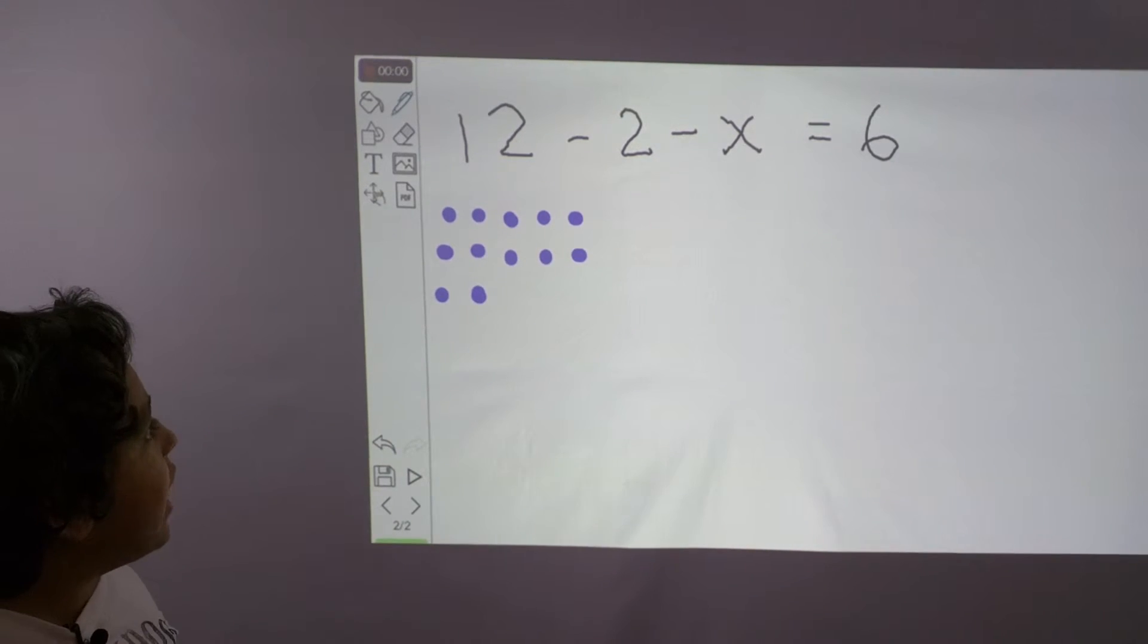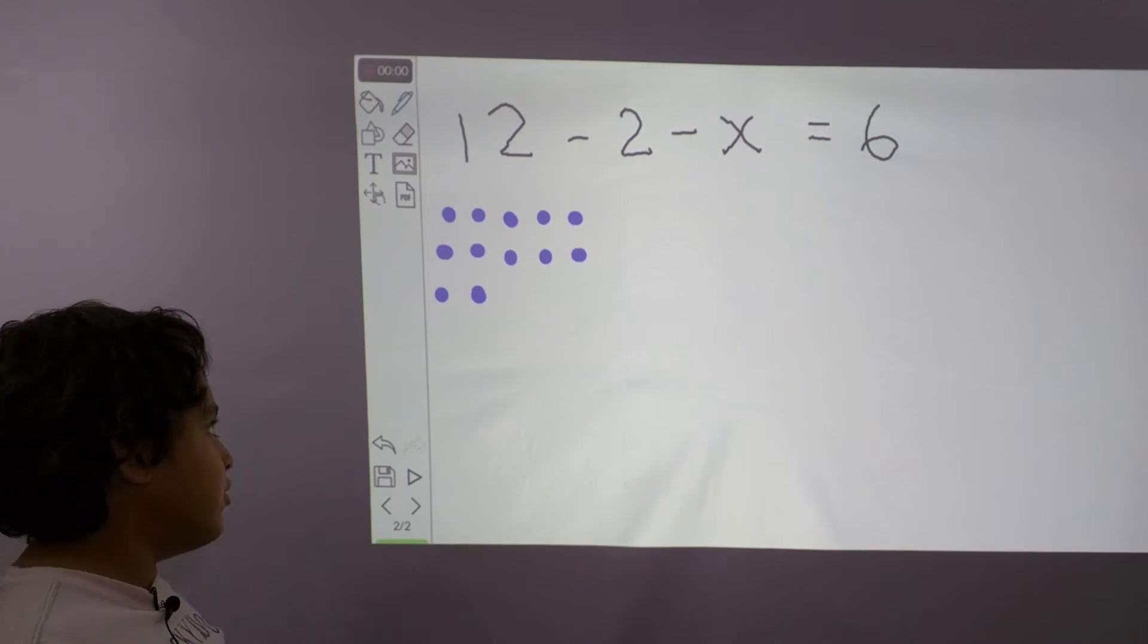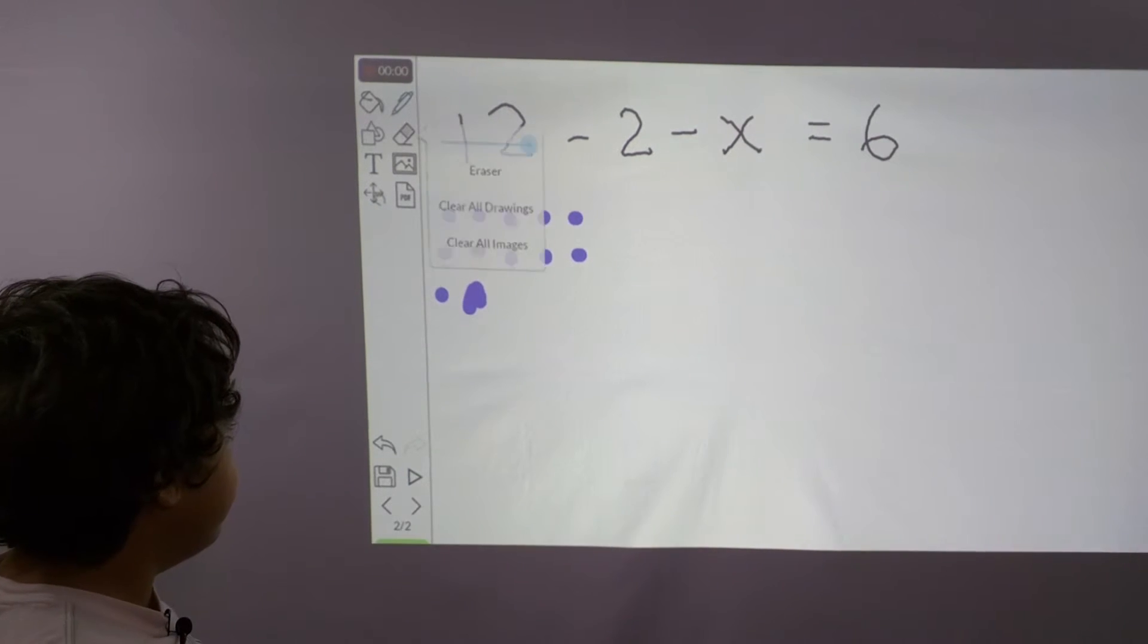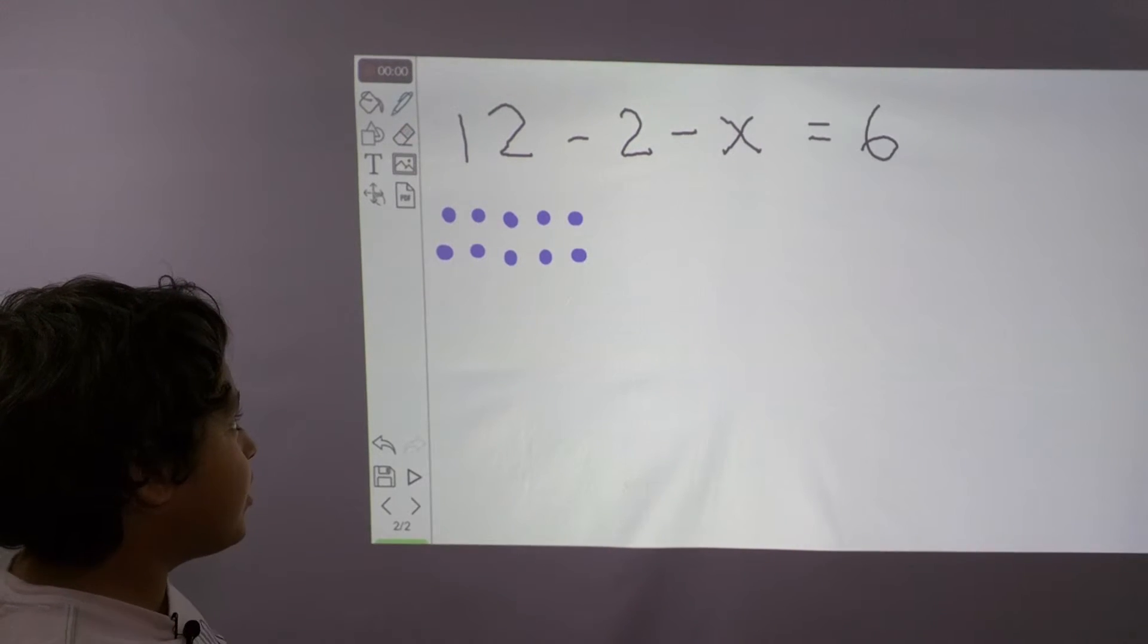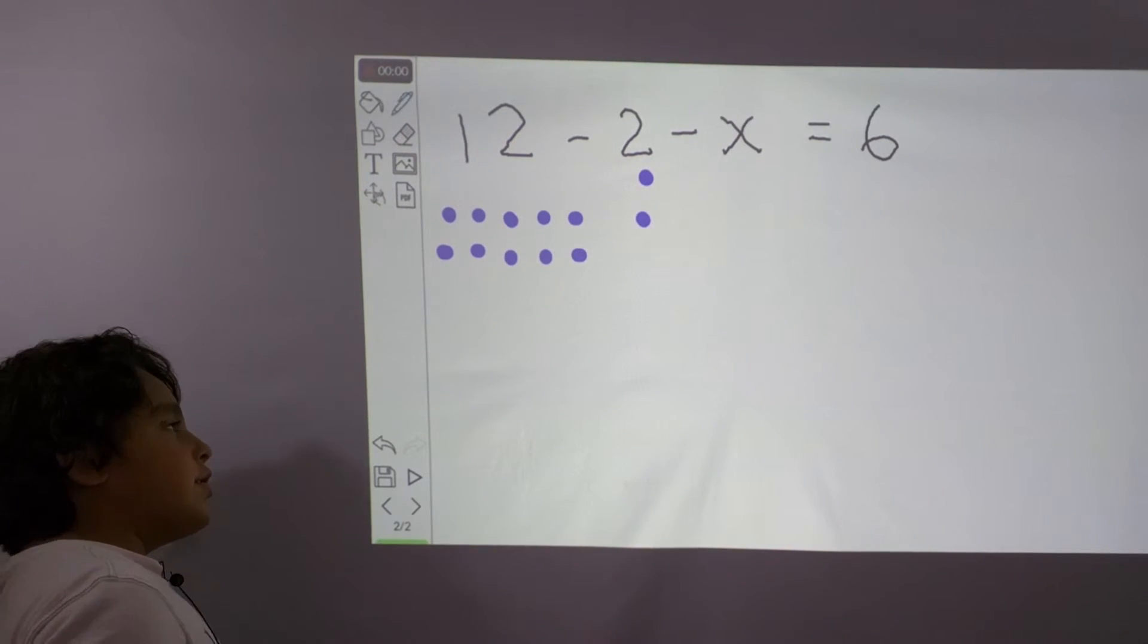Okay, so we have 12 dots. We're going to take away 2 and put it under the 2. 1, 2. And now we're going to put those dots under the 2.